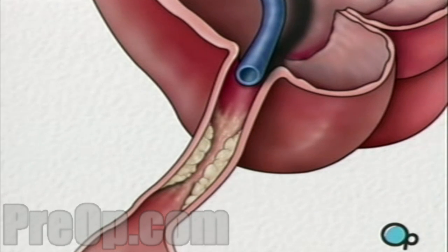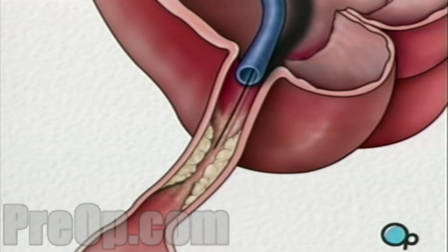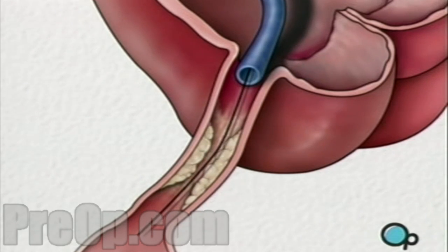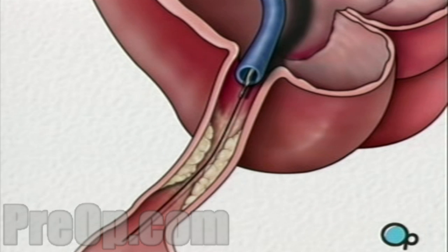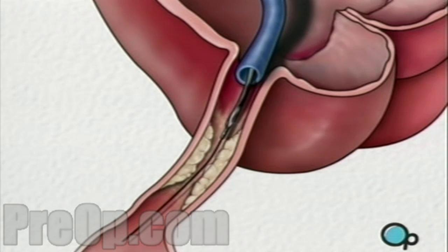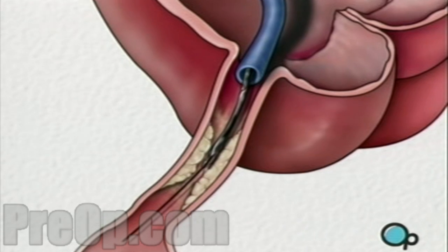Once the restricted area has been identified, a thin wire is inserted into the catheter and is guided all the way to the blocked area and then slightly beyond. This wire acts as a guide for the balloon catheter. It allows your doctor to position the deflated balloon precisely in the middle of the narrowest part of the coronary artery.